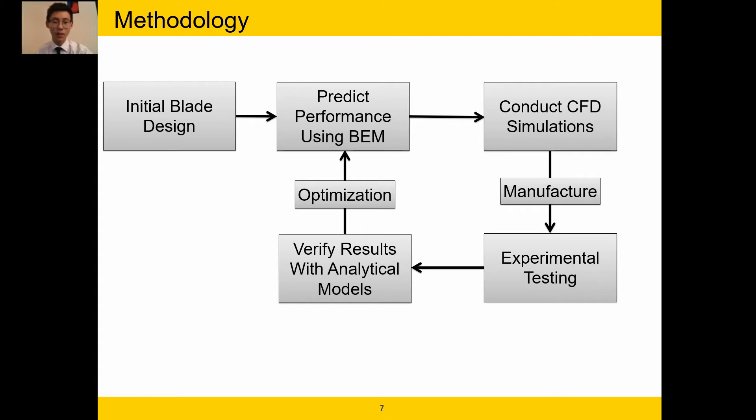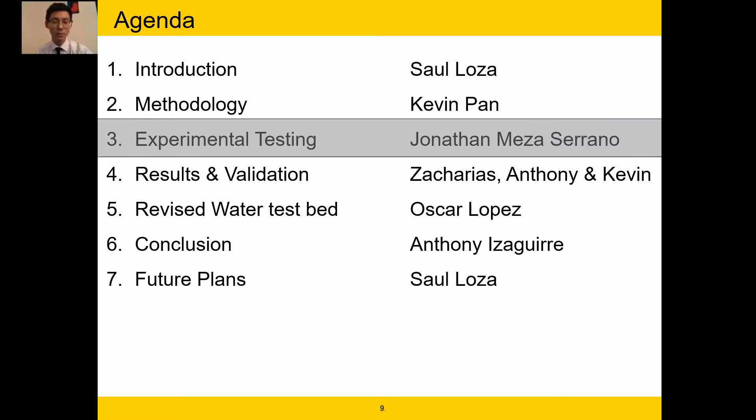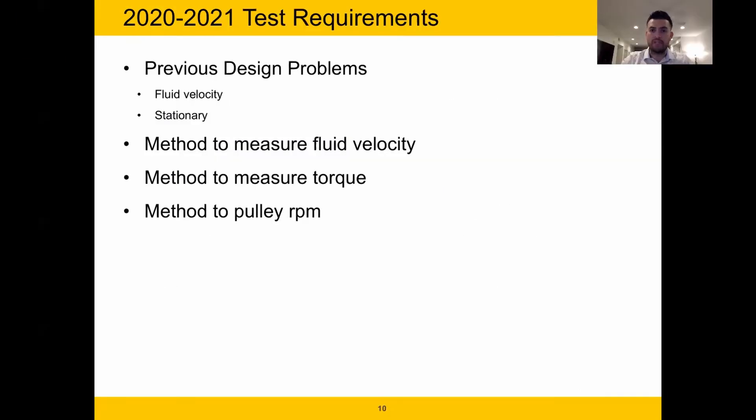This project has been four years in the making, and our team started off with the experimental testing. Prior teams have started with testing out turbine designs, optimizing them, and testing in the wind tunnel. Due to the limitations of the wind tunnel not being able to reach higher subsonic speeds, tests were shifted to water testing, as water is closer to viscous effects on Venus. And now I will be passing it on to Jonathan to talk about the experimental testing.